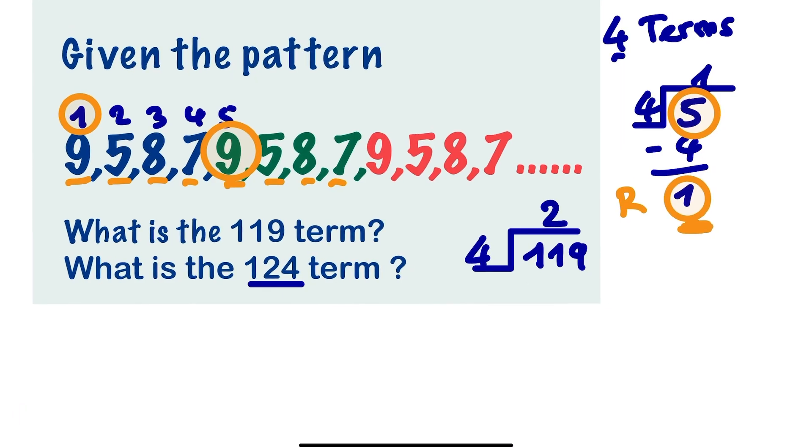We have 2. 11 divided by 4 can go 2 times. If we multiply, we have 8. If we subtract this, we are going to have 3. And we are going to have 9. So it's going to go 9 times. If we multiply this, we are going to have 9 times 4, which is 36. We subtract.